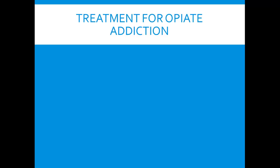Let's look at treatments for opiate addiction. The British system is only available in Great Britain — it's a situation where heroin can actually be prescribed. The user would get a prescription for heroin. This seems to cut down on crime associated with procuring the drug, and also seems to cut down on communicable diseases from folks sharing needles and things like that.